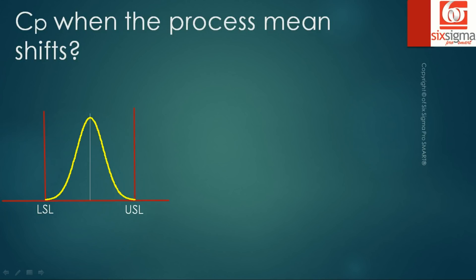Let's do a quick recap of what we've discussed so far. We've talked about the specification limits as provided by a customer, and the specification width, which is USL minus LSL. We also talked about process width, which is our process's capability and is typically calculated as six sigma — because in a normal distribution, 99.73% of data points fall within plus or minus three standard deviations of the mean, making the total process width six sigma.